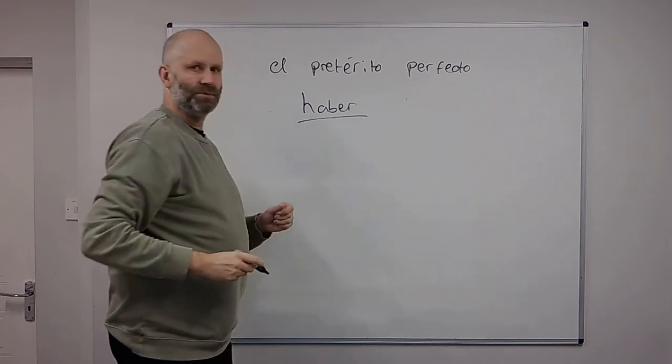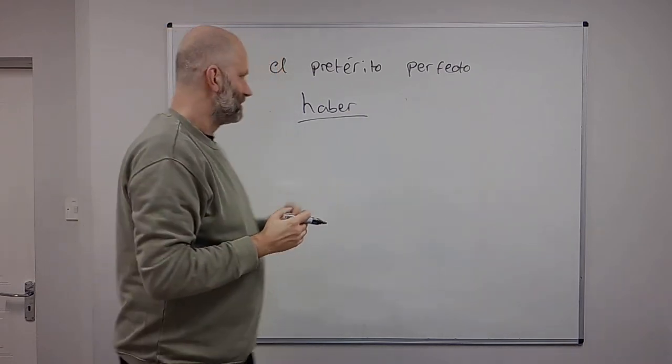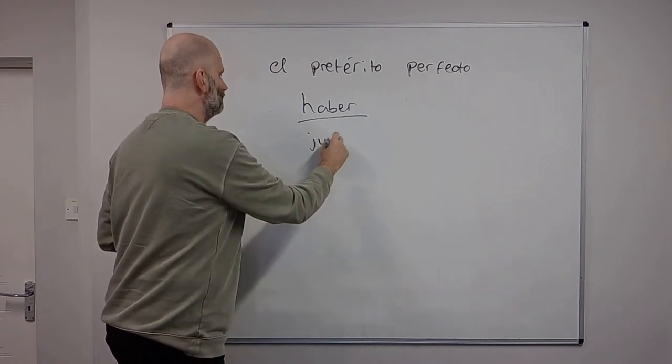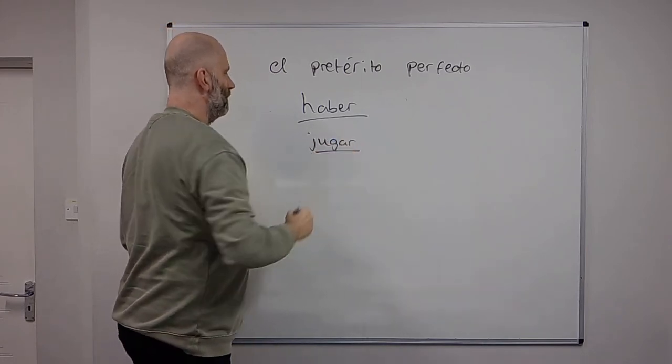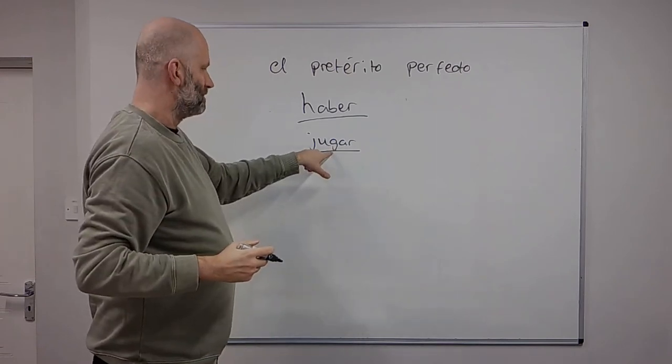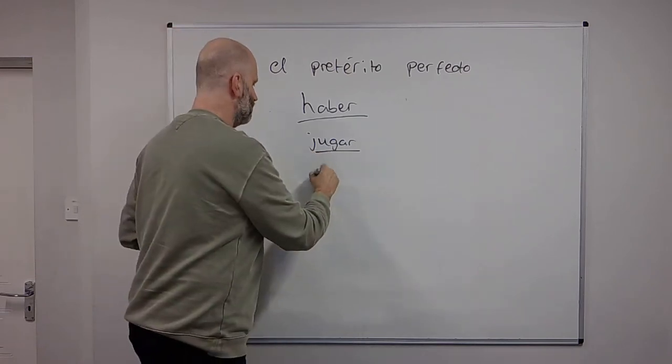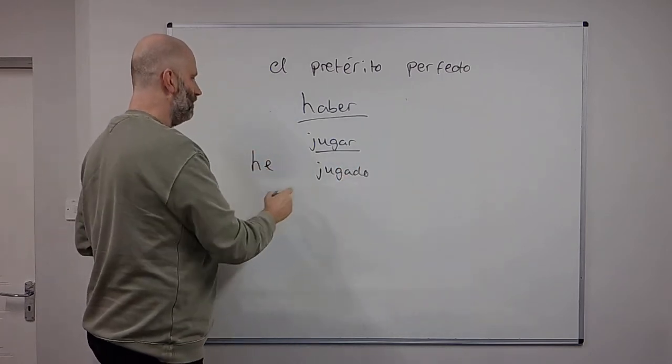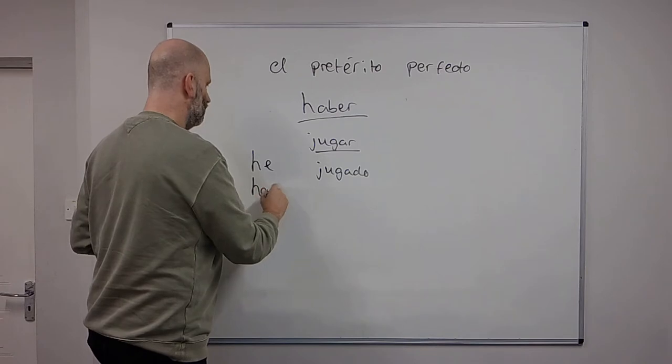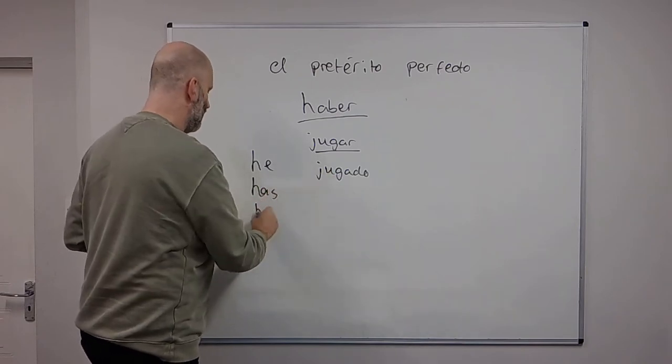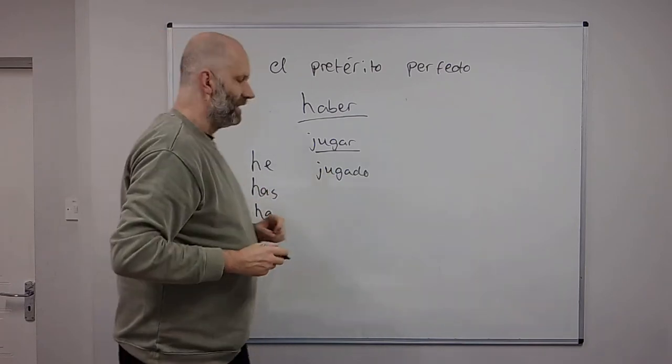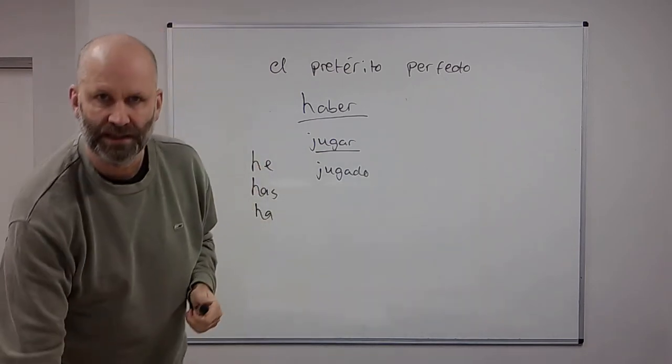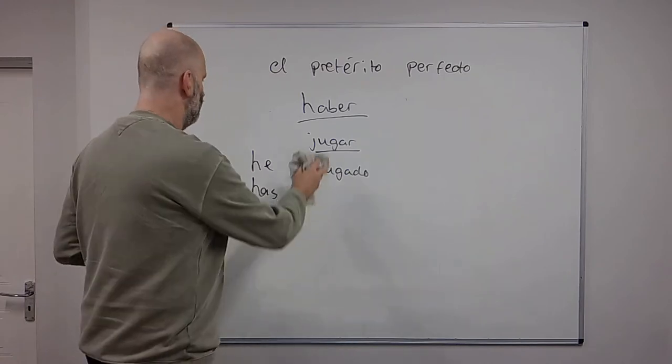Now what we'll do is we'll look at the, so if you say something like jugar, to play, so to form the past participle, it becomes jugado. And then you just say he jugado, I've played, has jugado, you've played, ha jugado, he or she or usted has played. So what we'll do is, first of all, look at the conjugation of the verb haber.